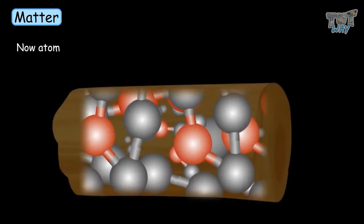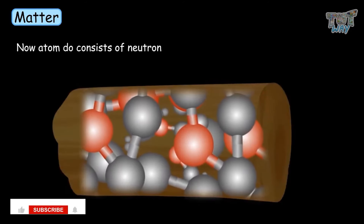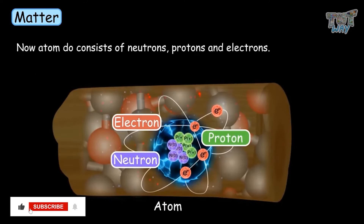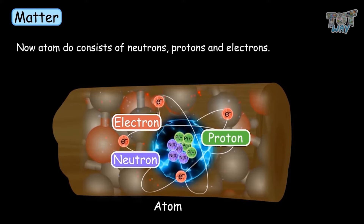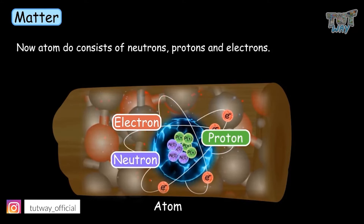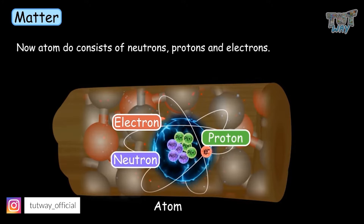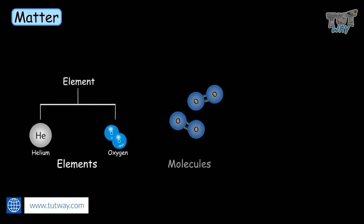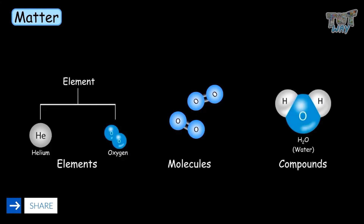Now atoms consist of a nucleus, protons, and neutrons. But we will see the detailed structure of the atom in our next section. Today we will learn about elements, molecules, and compounds.